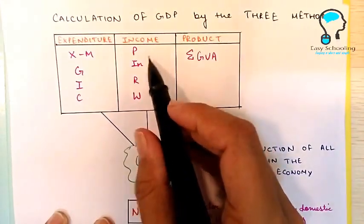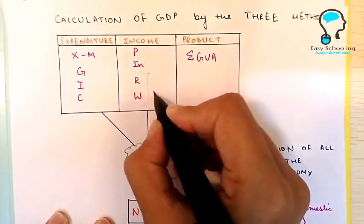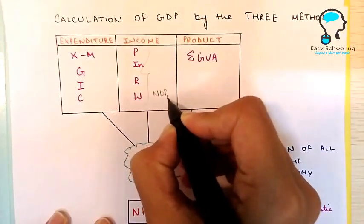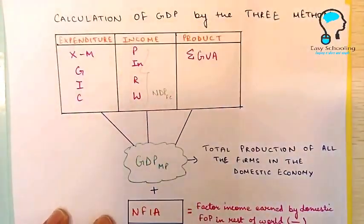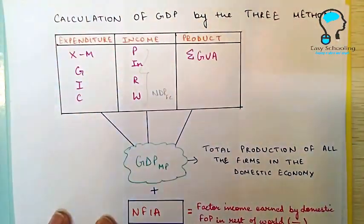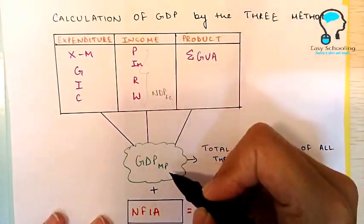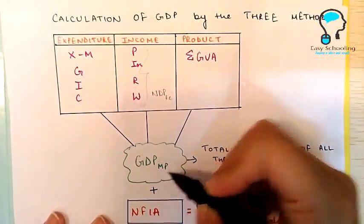If you add these four factors in income method, that is you are adding all the factor payments, this is going to give you NDPFC of the economy. So from NDPFC you have to calculate GDPMP if required, or you can directly calculate NNPFC, that is the national income.